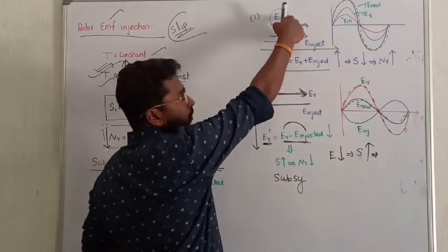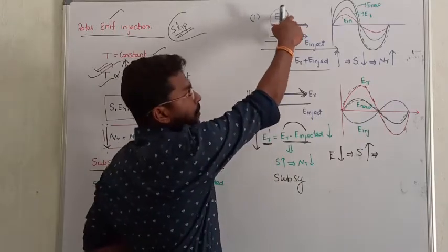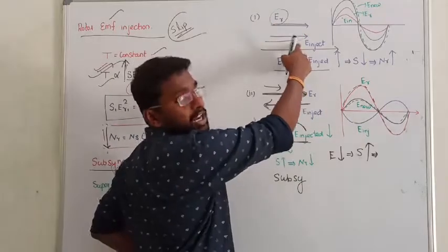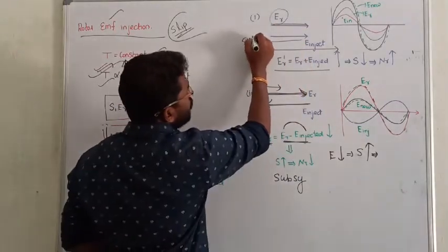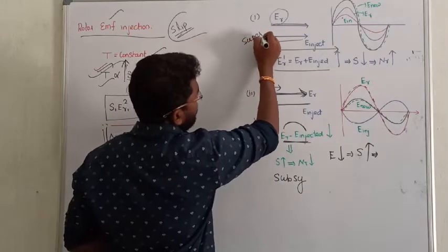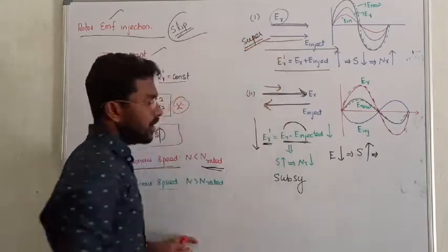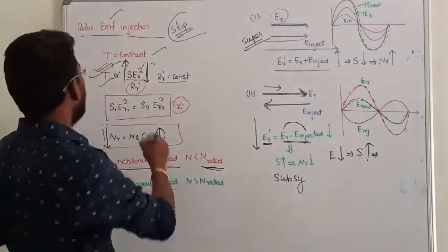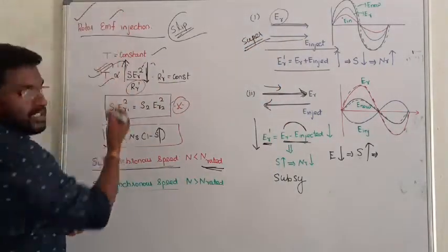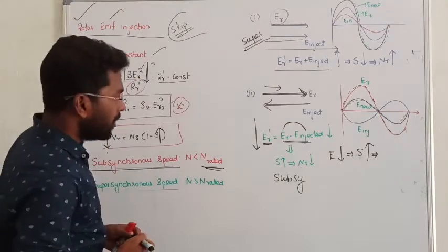So there are two cases. If we inject EMF in phase with the induced EMF, they add up — that gives super-synchronous speed, meaning speed above rated. If we inject EMF in the opposite phase to the induced EMF, they subtract — that gives sub-synchronous speed, meaning speed below rated. This is all about the EMF Injection Method.